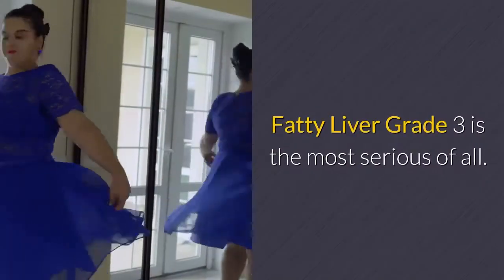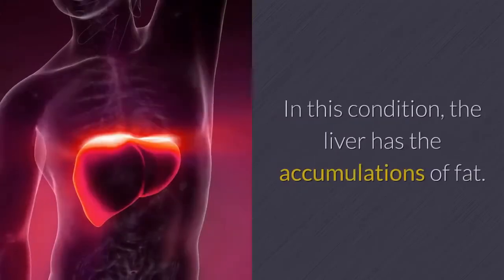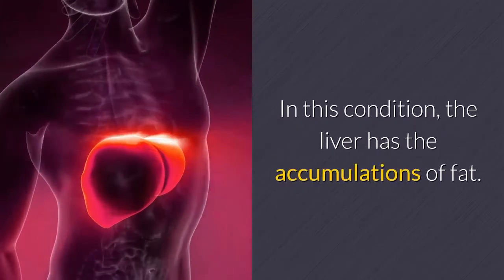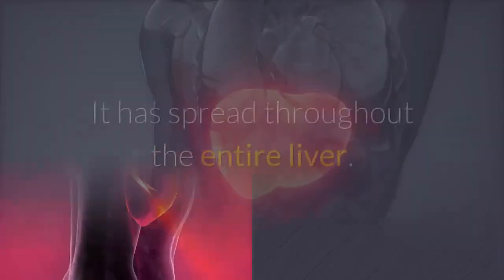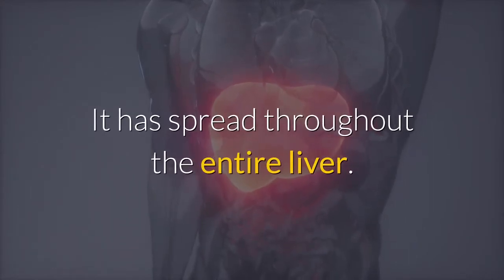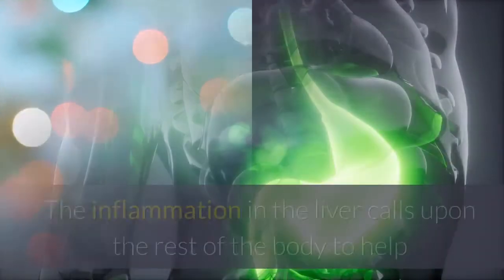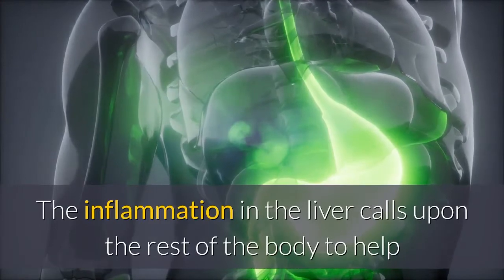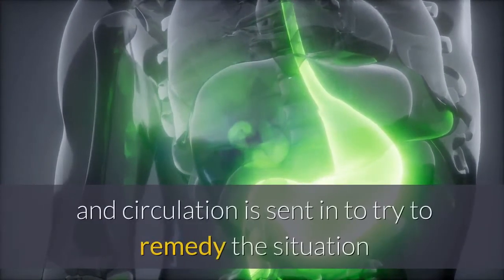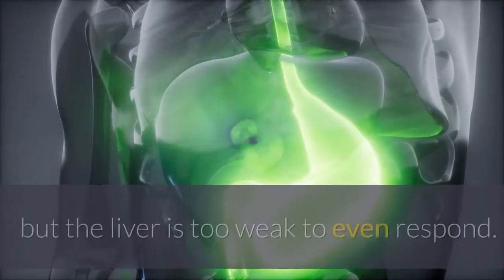Fatty liver grade 3 is the most serious of all. In this condition, the fat accumulations have spread throughout the entire liver. It has now become inflamed. The inflammation in the liver calls upon the rest of the body to help, and circulation is sent in to try to remedy the situation.